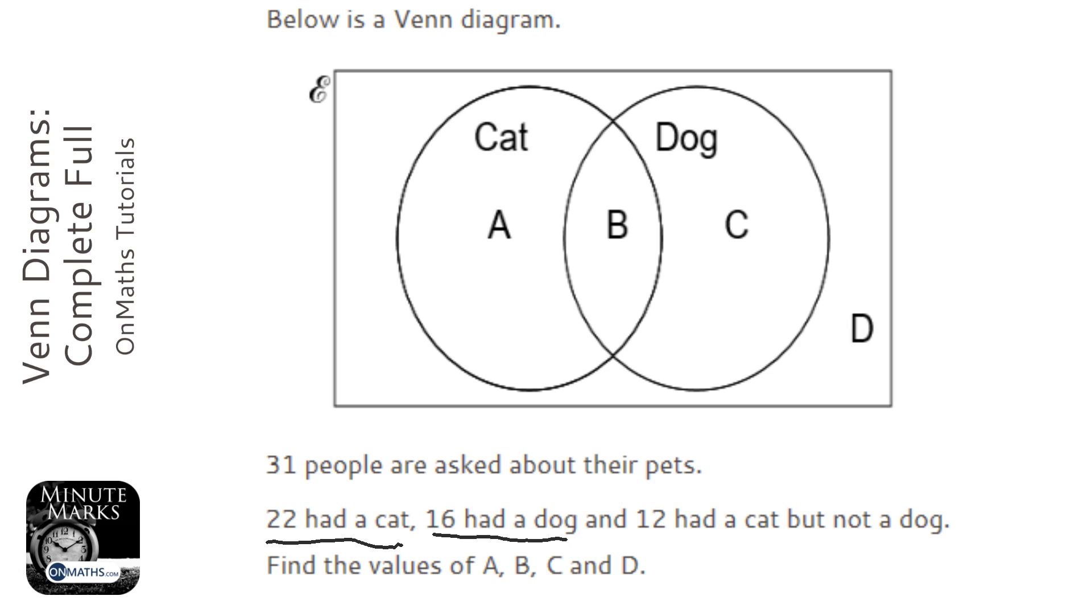But this piece of information here will help us start. It says 12 had a cat but not a dog, so this is going to be 12 here.